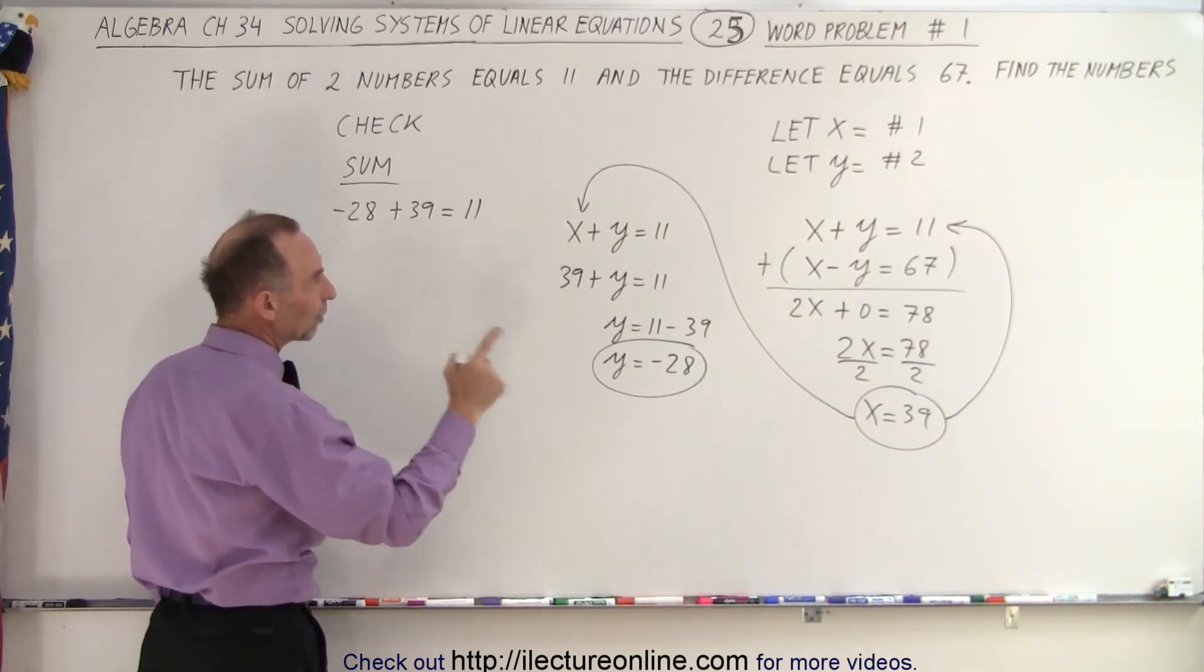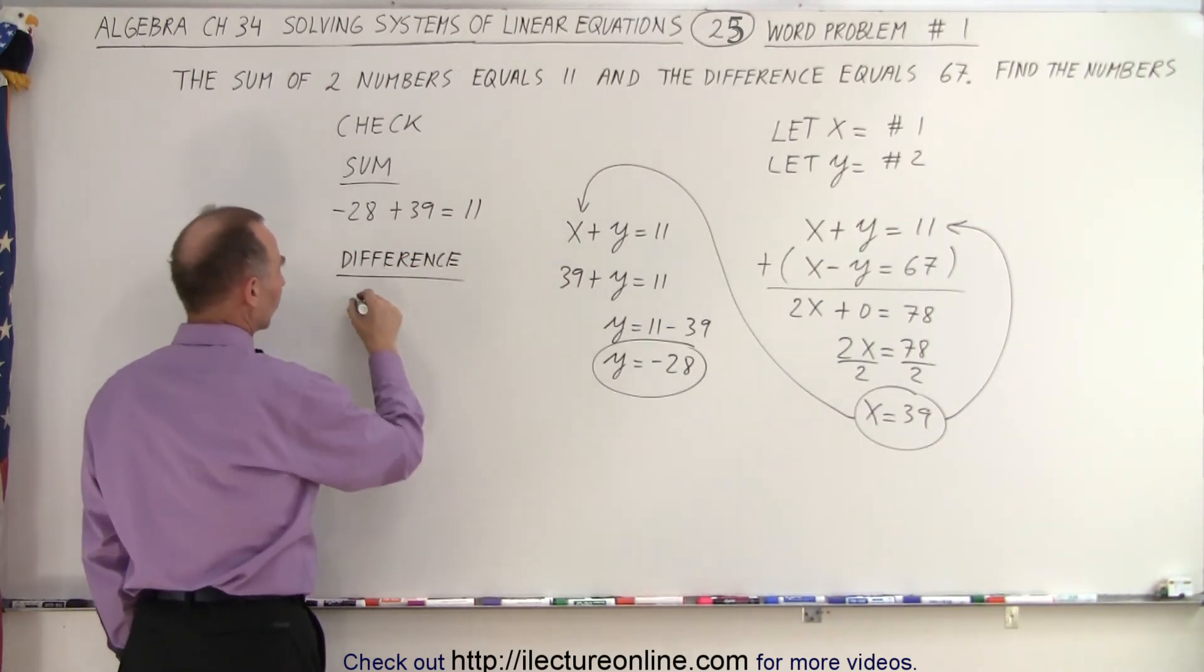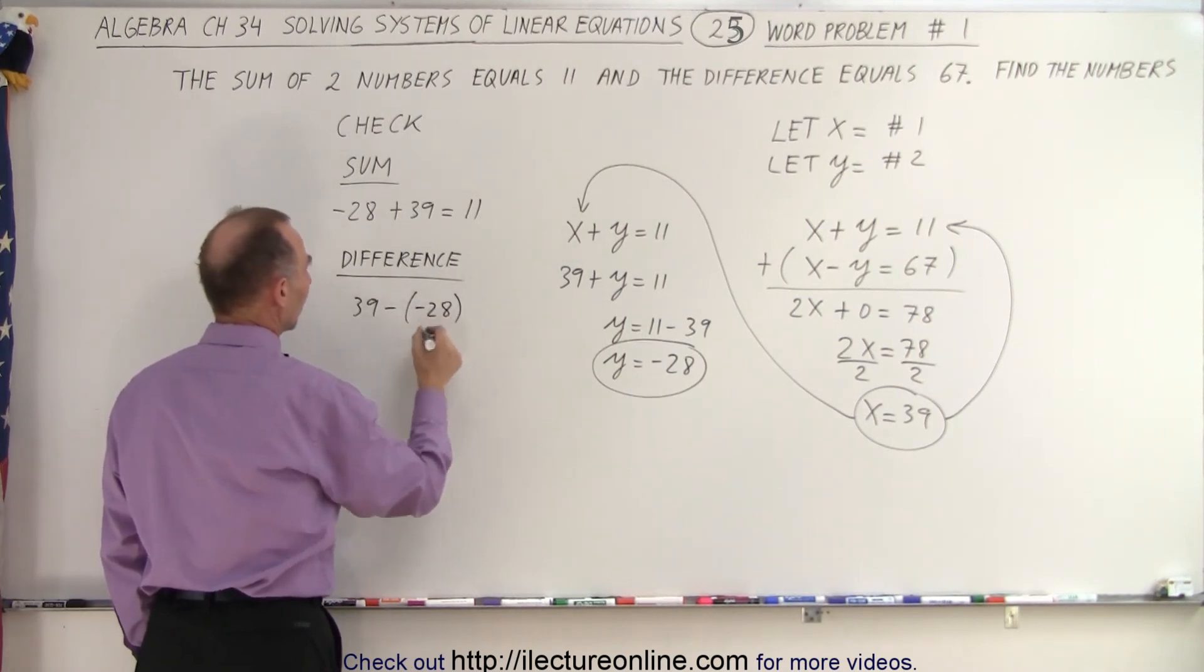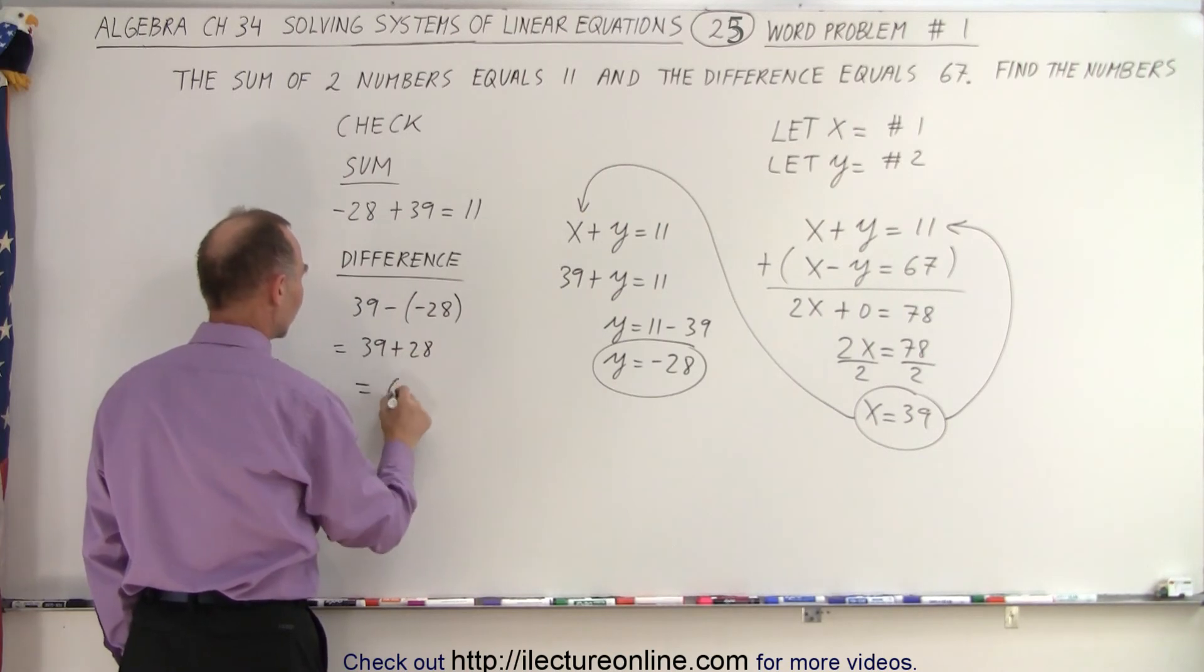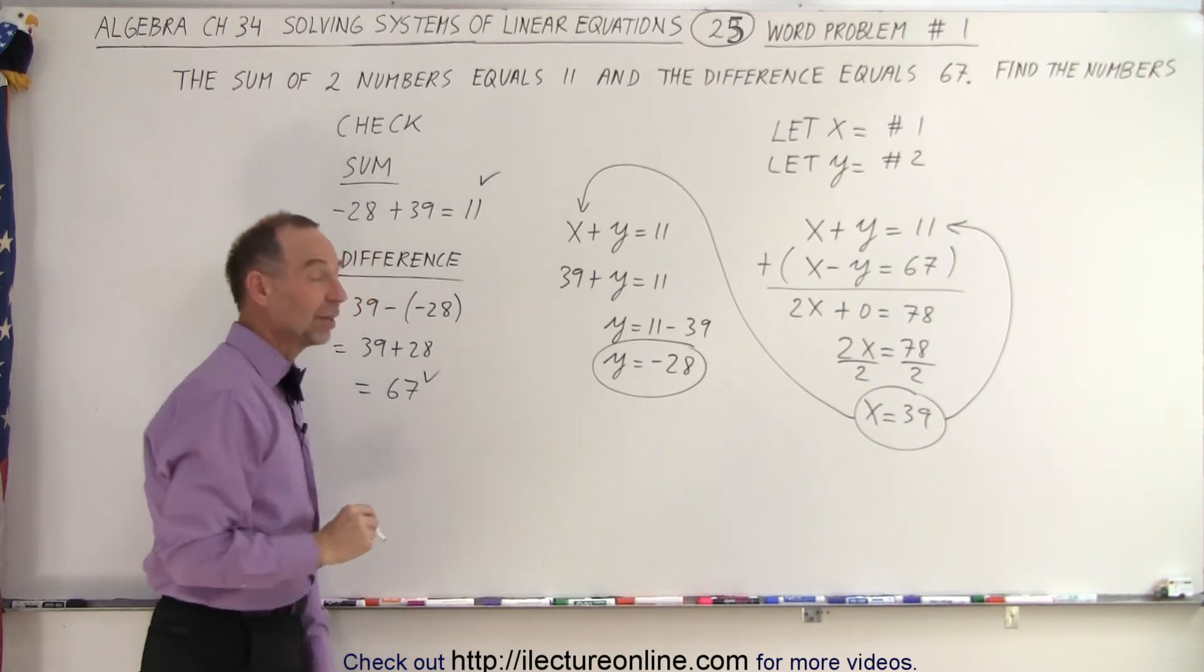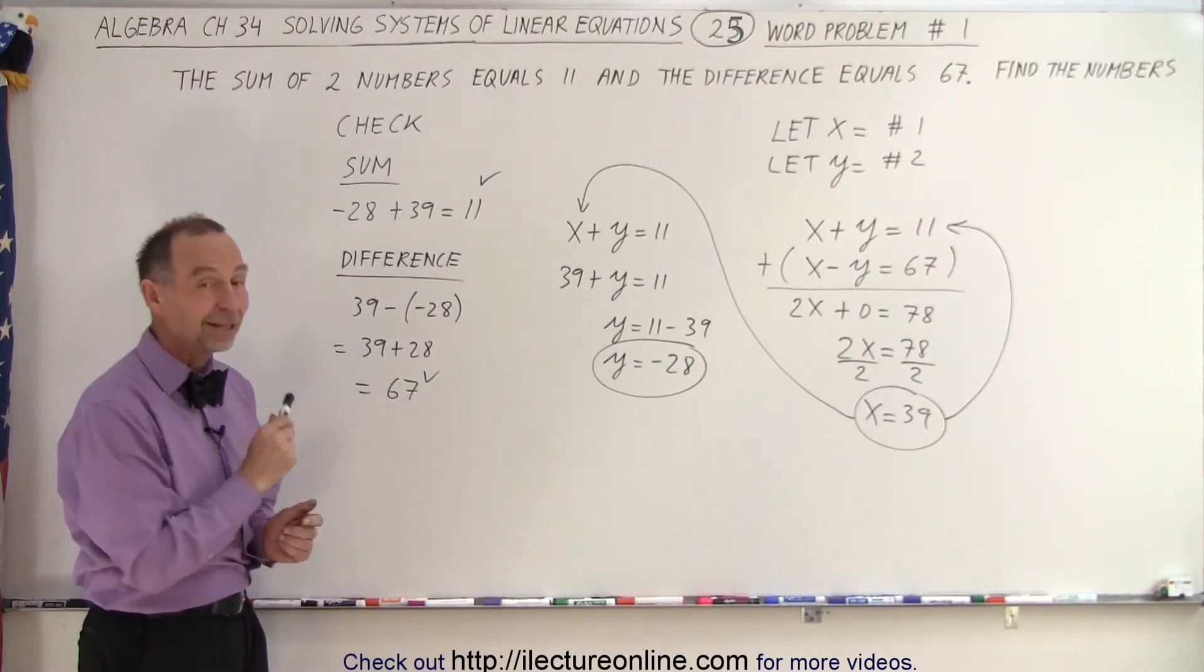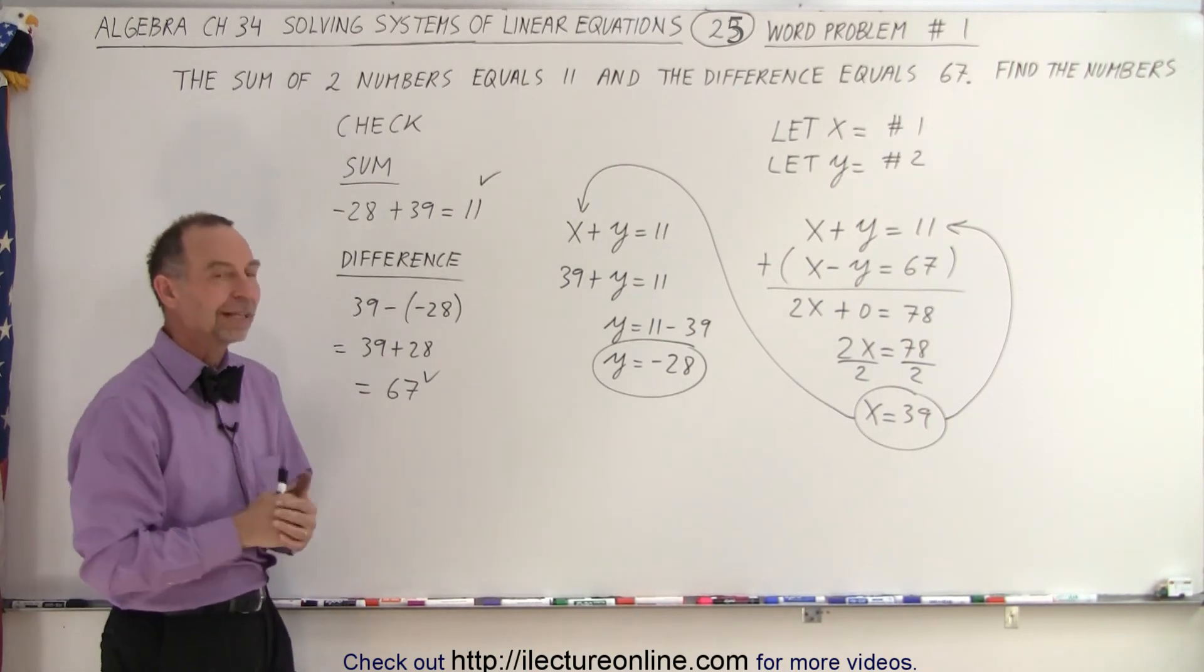Notice we want x minus y. x is 39, so the difference is 39 minus y, which is negative 28. What is that equal to? That equals 39 plus 28, which equals 67. So we got 11 and 67 for the sum and the difference, so we did it correctly. And that is how it's done using the method where we solve a system of linear equations.